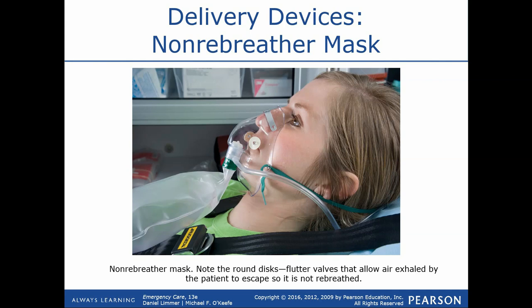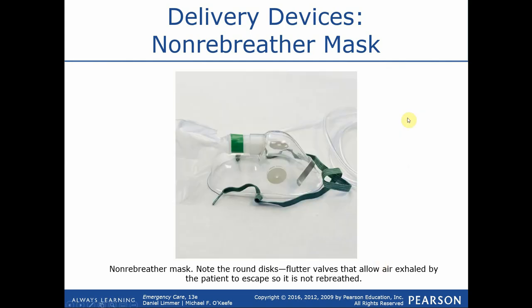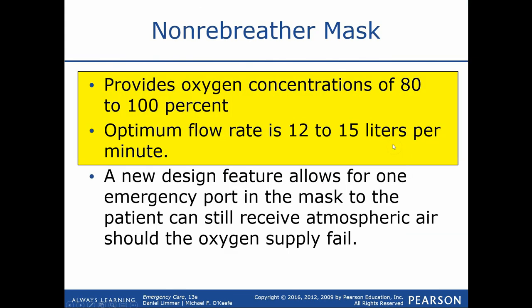Flowing substantially more oxygen than needed wastes an expensive supply — while treating the patient first and foremost, being mindful of supply costs matters for the employer. Non-rebreather masks come in adult, pediatric, and infant sizes. When used with proper flow, a non-rebreather mask delivers approximately 80 to 100% oxygen concentration. The optimal flow rate is 12 to 15 liters per minute, but this is a guideline — flow can be adjusted lower or higher based on patient needs.